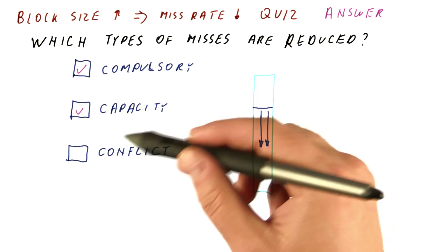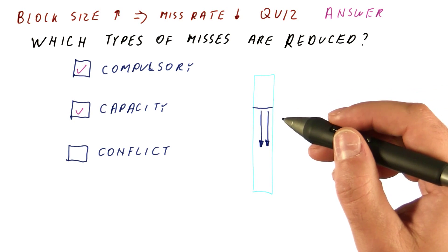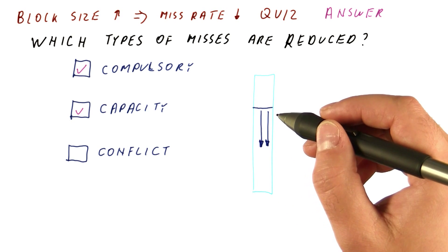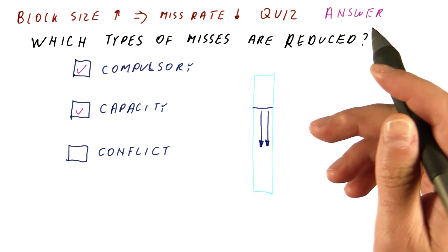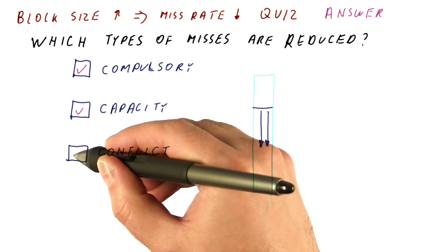And finally, if we look at conflict misses, we can construct a similar example where two blocks are kicking each other out. And because each time we fetch a larger block, if the block size goes up, we will be having fewer conflict misses.